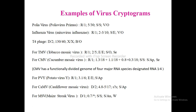Now let's look at examples of virus cryptograms. For poliovirus, the cryptogram has 4 pairs. It is an RNA virus, single-stranded. Its nucleic acid is 5 million in molecular weight and 30% of the infective particle is nucleic acid. It is spherical in shape and the nucleocapsid is also spherical. It infects vertebrates and the vector is not known.